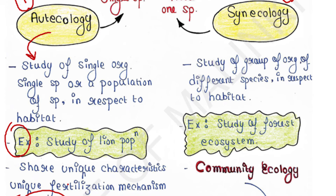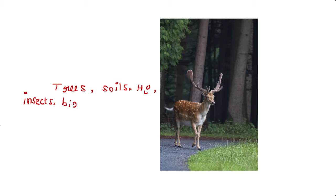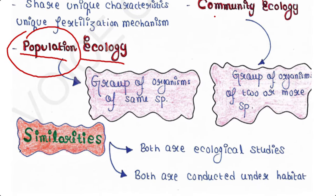Synecology is the study of a group of organisms belonging to different species in respect to their natural habitat. Example: study of a forest ecosystem. A forest ecosystem comprises of trees, soils, water, insects, birds, animals, and men as its interacting units. Synecology is also termed as community ecology.